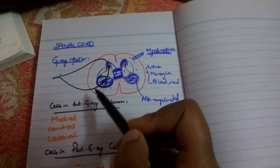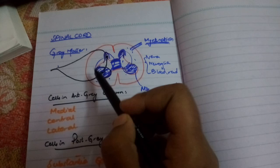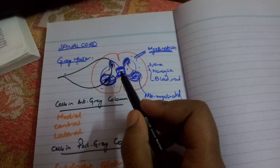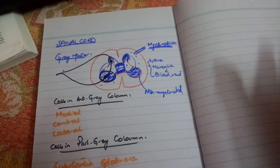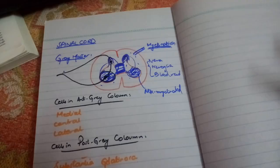These motor neurons are always multipolar — that is the first property. Now, what types of cells are present? We have divided them into three parts based on which effectors they are going to supply. The anterior gray column of the spinal cord has various nerve cells for all the effectors.